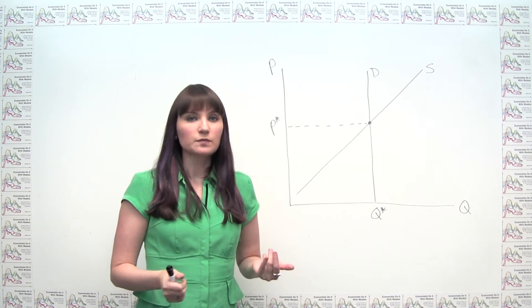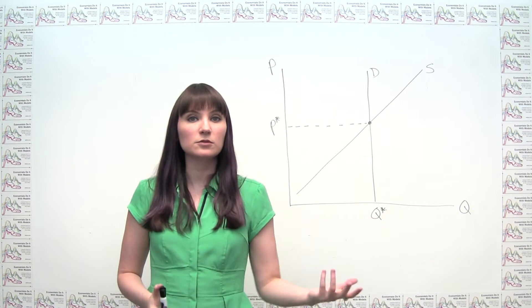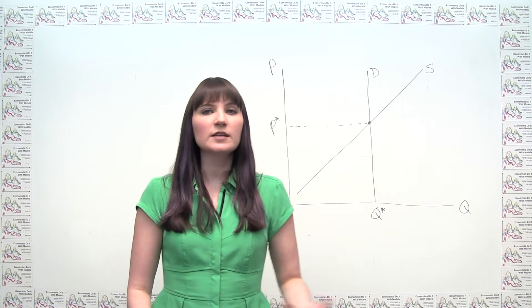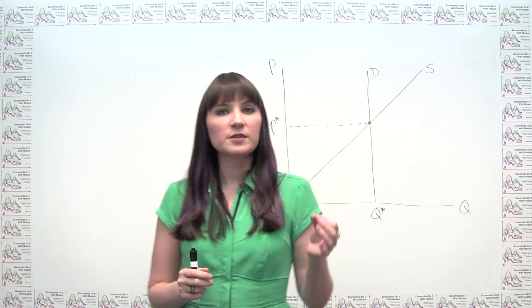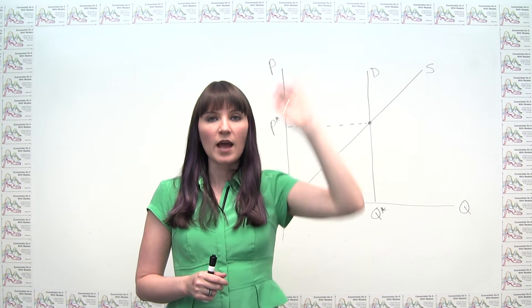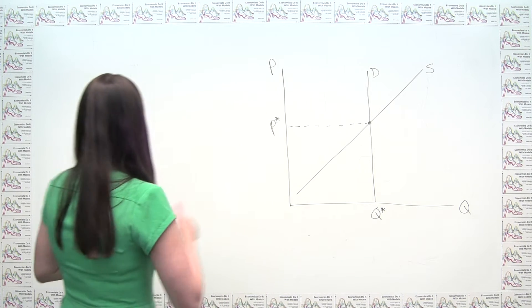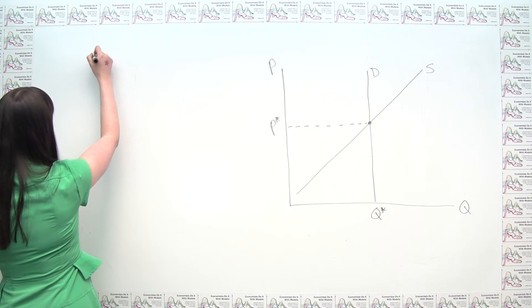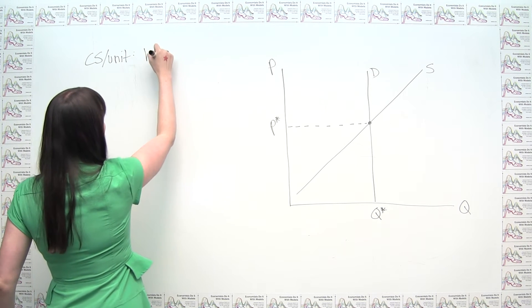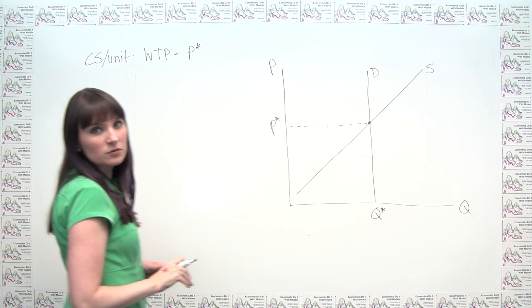So, let's think about what's going on. Rather than think graphically about this, let's revert back to the conceptual definition of consumer surplus. And we said the consumer surplus was the difference between the maximum that a consumer would pay for a product and the actual price that the consumer's charged. So, the consumer surplus on one unit is just willingness to pay minus the actual price charged. And we know that to be true.